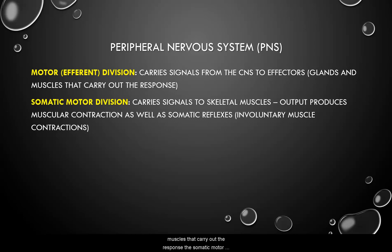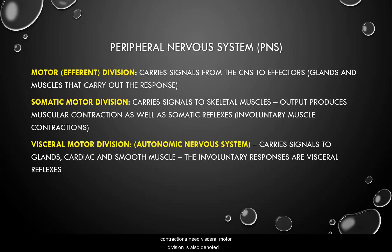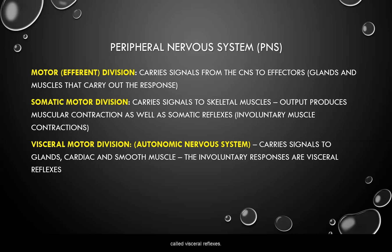The somatic motor division carries signals to skeletal muscles. The output produces muscular contraction as well as somatic reflexes, which are involuntary muscle contractions. The visceral motor division is also called the autonomic nervous system. It carries signals to the glands, cardiac muscle, and smooth muscle, which results in involuntary responses also called visceral reflexes.